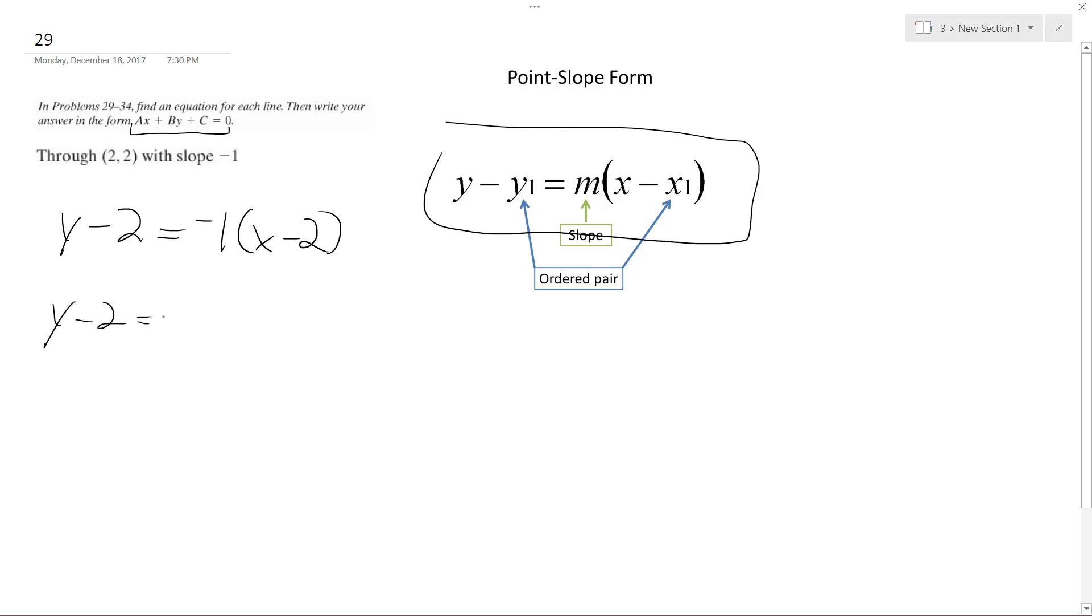I get y minus 2 is equal to negative x plus 2, add 2 to both sides, I get y is equal to negative x plus 4. That's it.